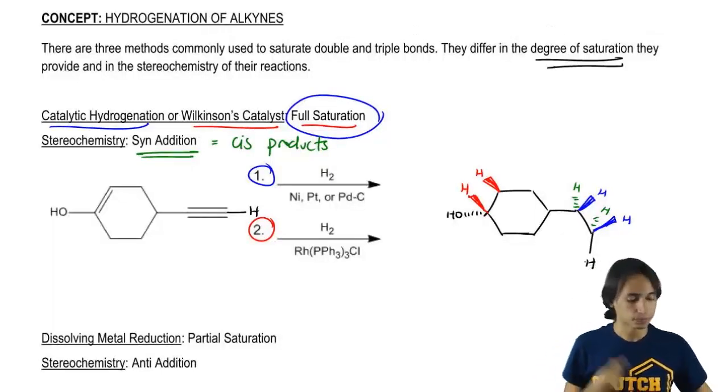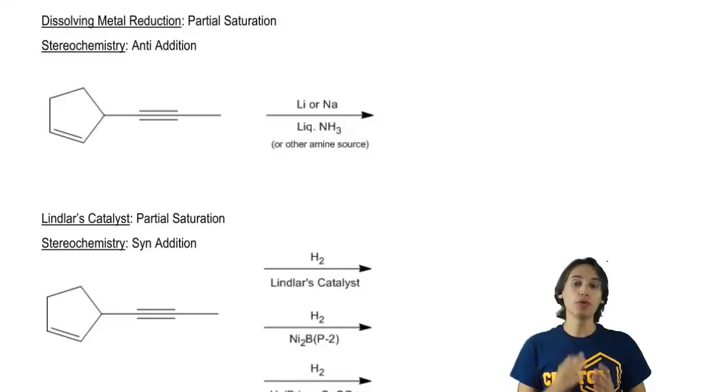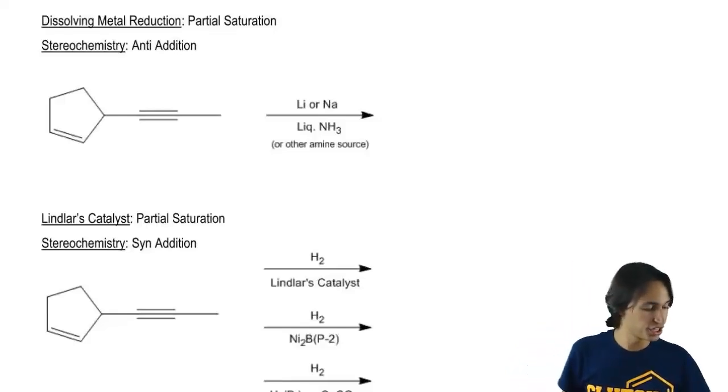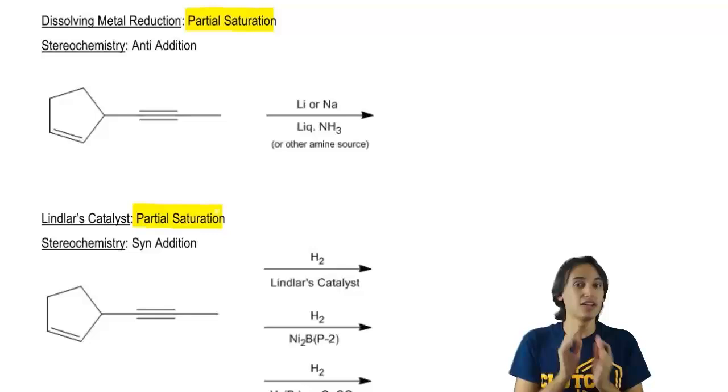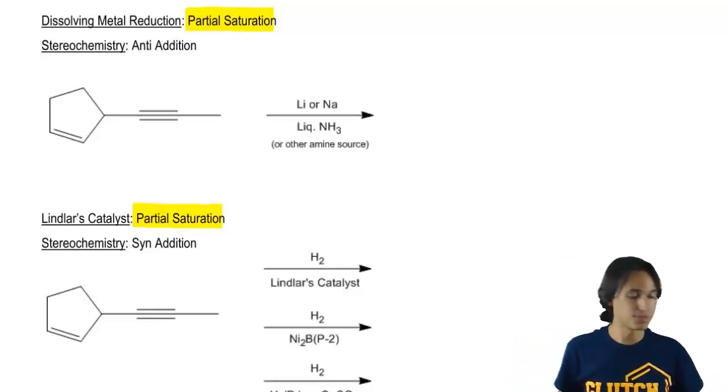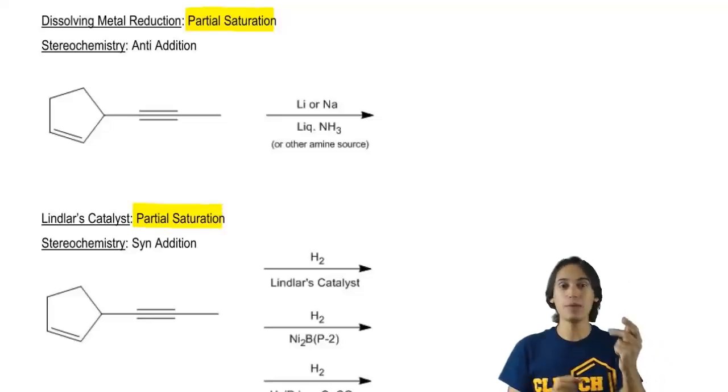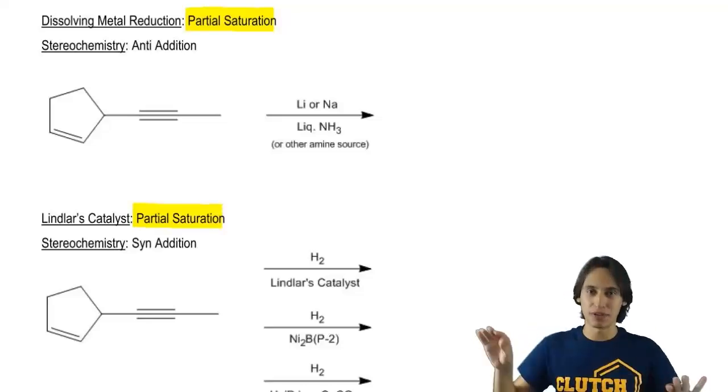Let's move on to the next reaction. Actually these next two are going to both be considered partial saturation. So what that means is that for these next two, I'm not saturating all the way to an alkane. What I'm doing is taking a triple bond and only reacting it to a double bond. So I am adding two hydrogens but I'm stopping there.